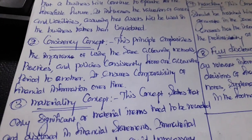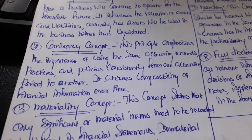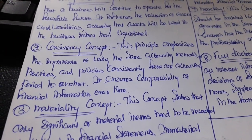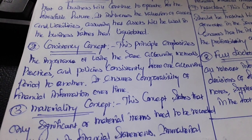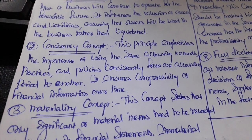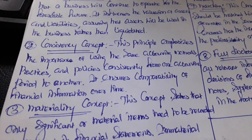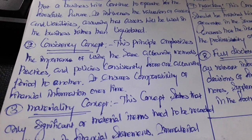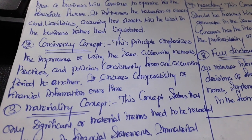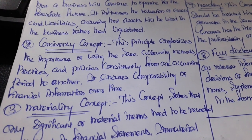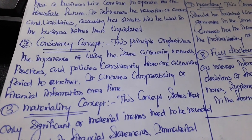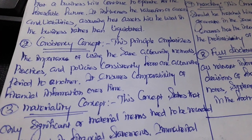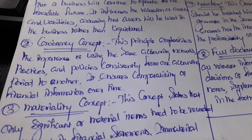The second concept is consistency. This principle emphasizes the importance of using the same accounting methods, practices, and policies consistently from one accounting period to another. It ensures the comparability of financial information over time.